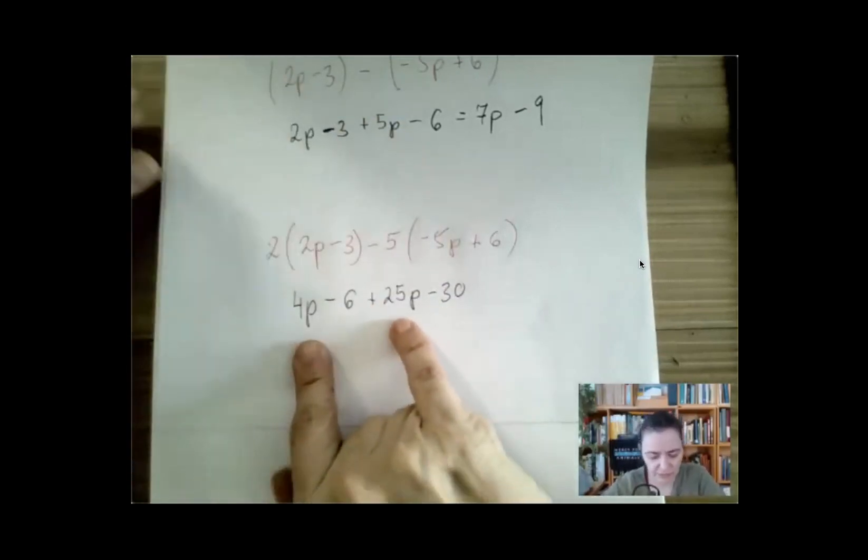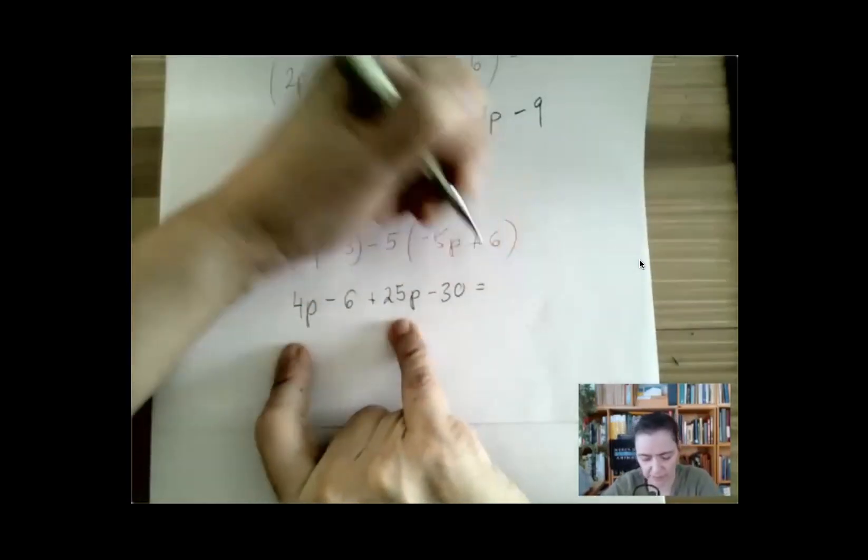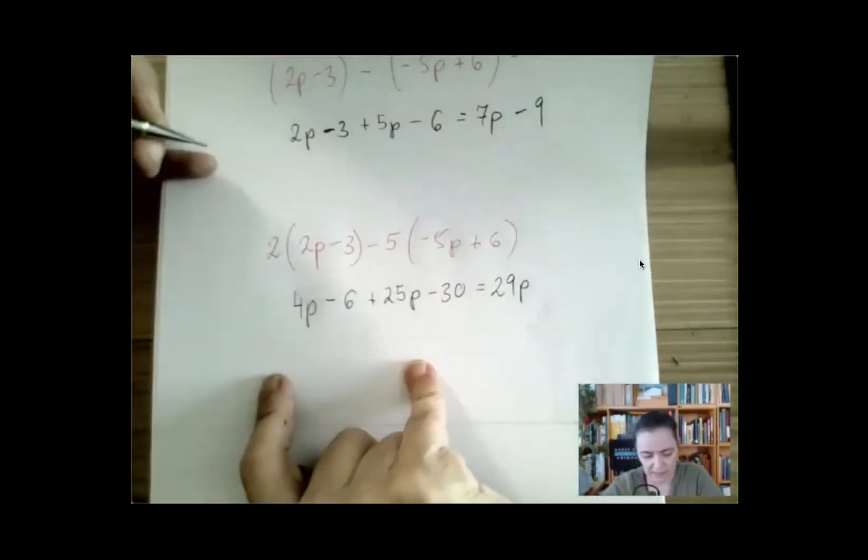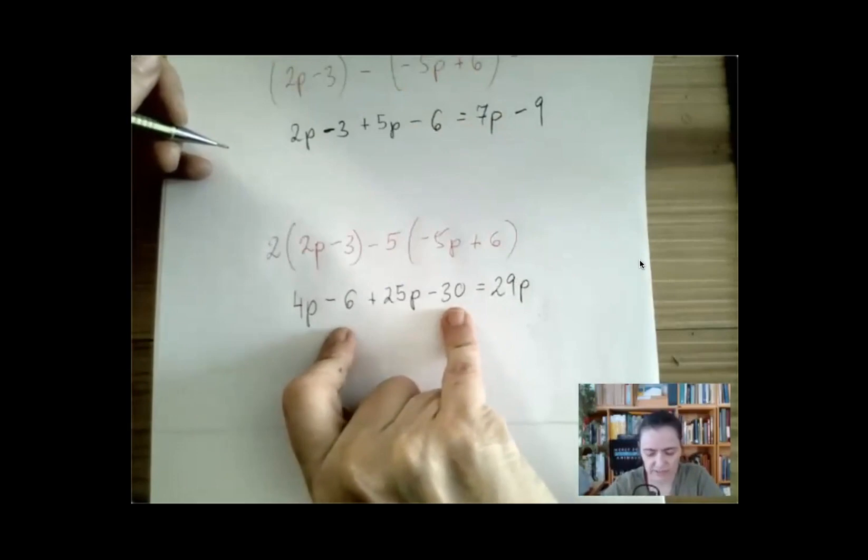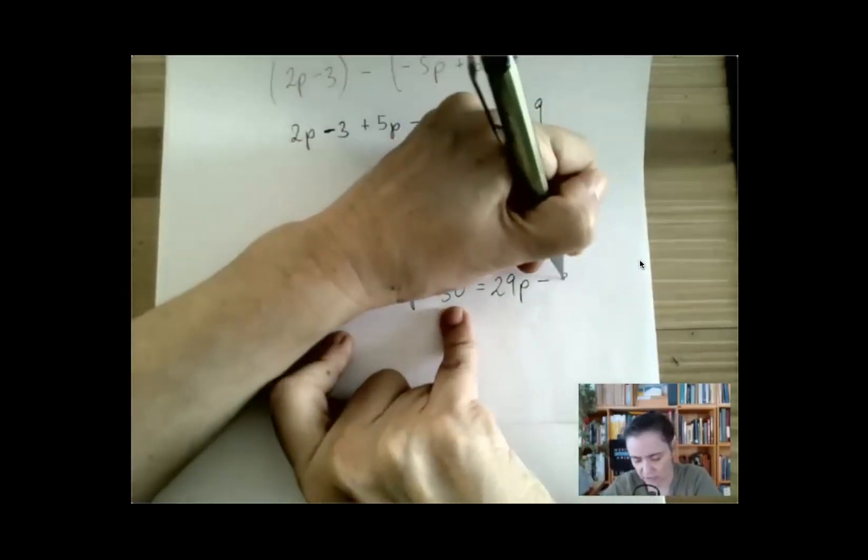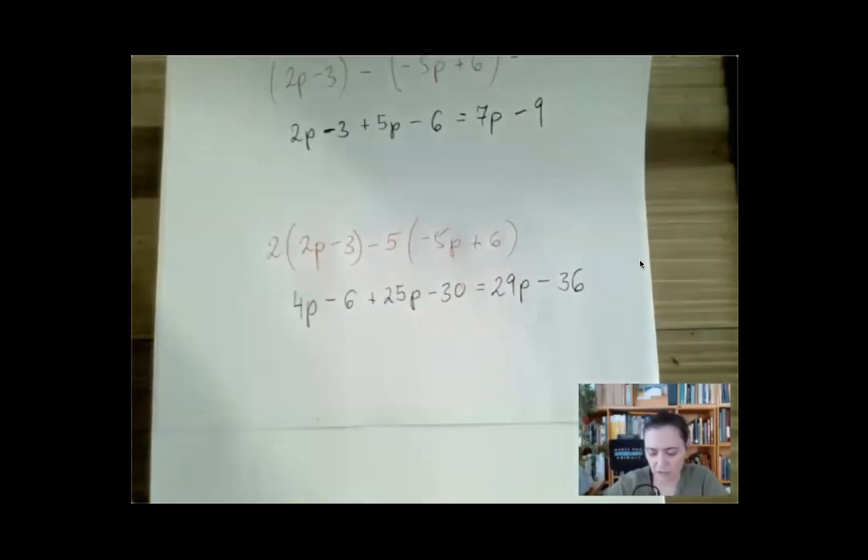And again, we have two pairs. 4p and 25p can be combined, and negative 6 and negative 30 are also like terms. And we combine them to negative 36. And that's how you do that one.